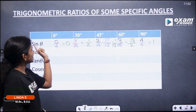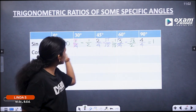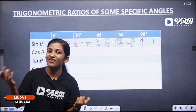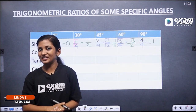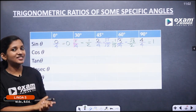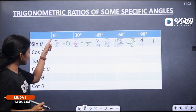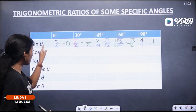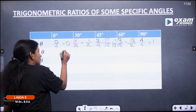Summary of sin values: sin 0° = 0, sin 30° = 1/2, sin 45° = 1/√2, sin 60° = √3/2, sin 90° = 1. Now, let's talk about cos values. Sin values and cos values are related. The relation is cos 0° equals sin 90° which equals 1. So cos 0° = 1.